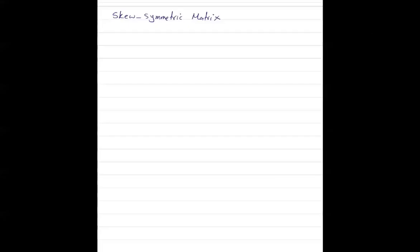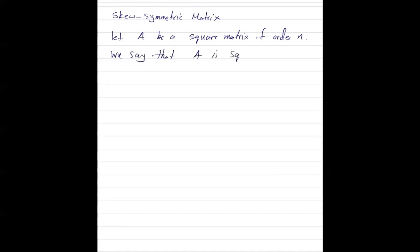What is a skew-symmetric matrix? Let A be a square matrix of order n. We say that A is skew-symmetric if you take the transpose of the matrix and it is equal to negative A, or minus A. These are popular matrices and we call them skew-symmetric matrices.